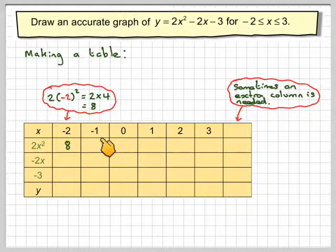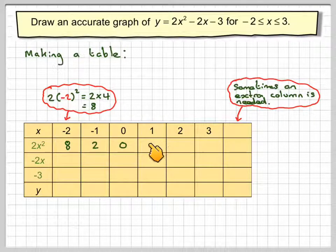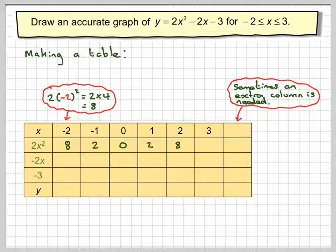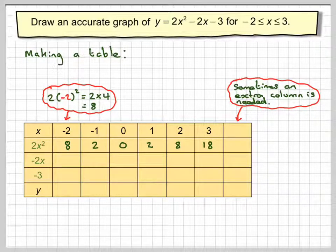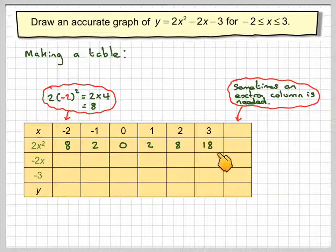We do the same with minus 1, and when we do that we're going to get 2, working out 2x squared. For x equals 0 we get 0, and when it's 1 we're going to get 2. For x equals 2: 2 times 2 squared is 8. For x equals 3: 3 squared is 9, times 2 which is 18. Please stop the video here and check to make sure you are sure how to get this row.